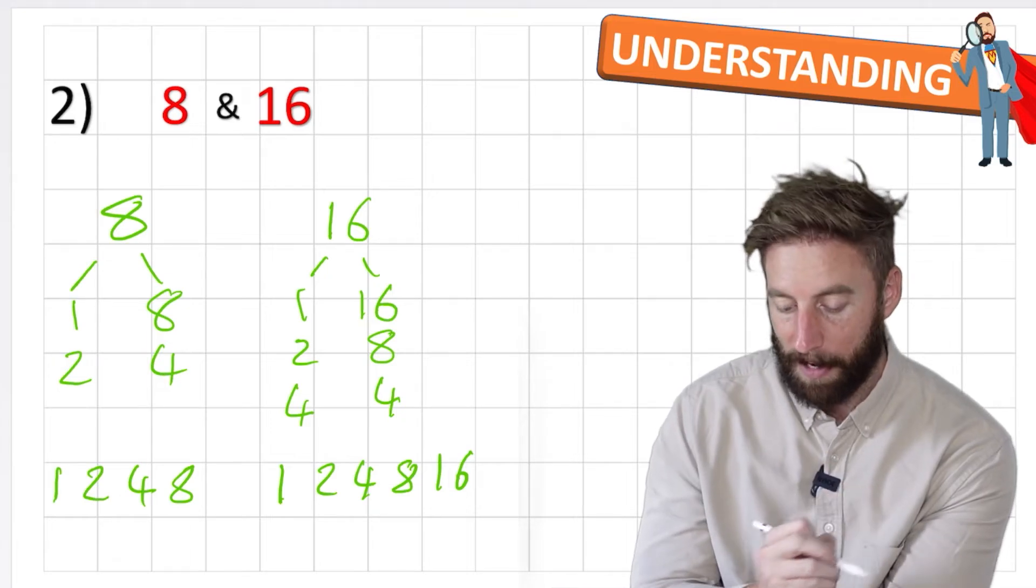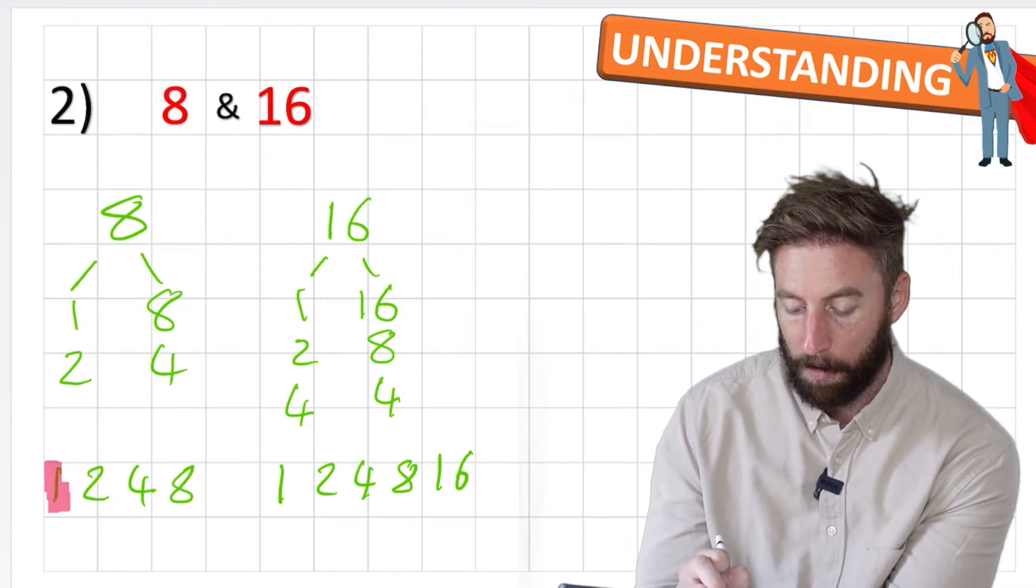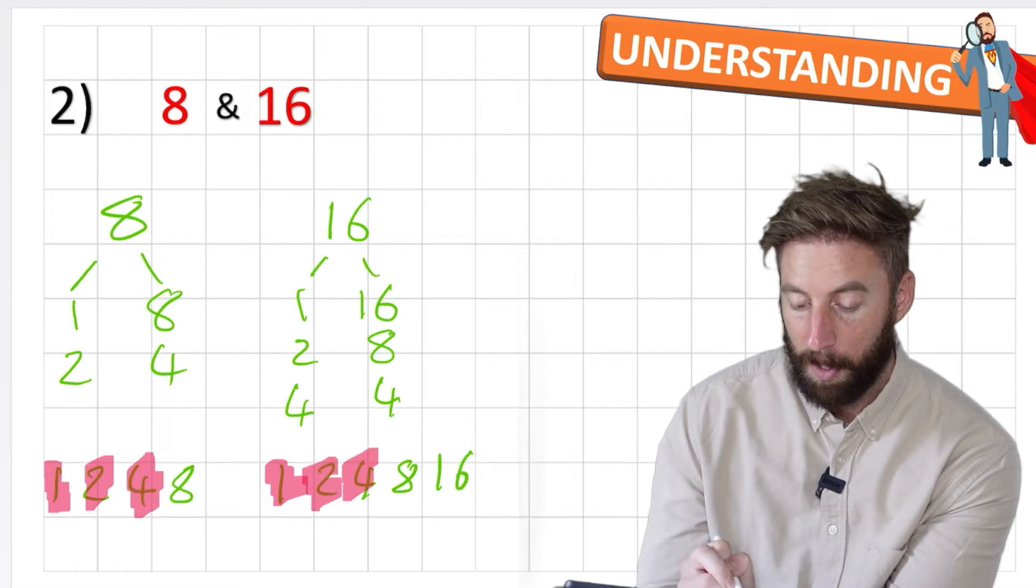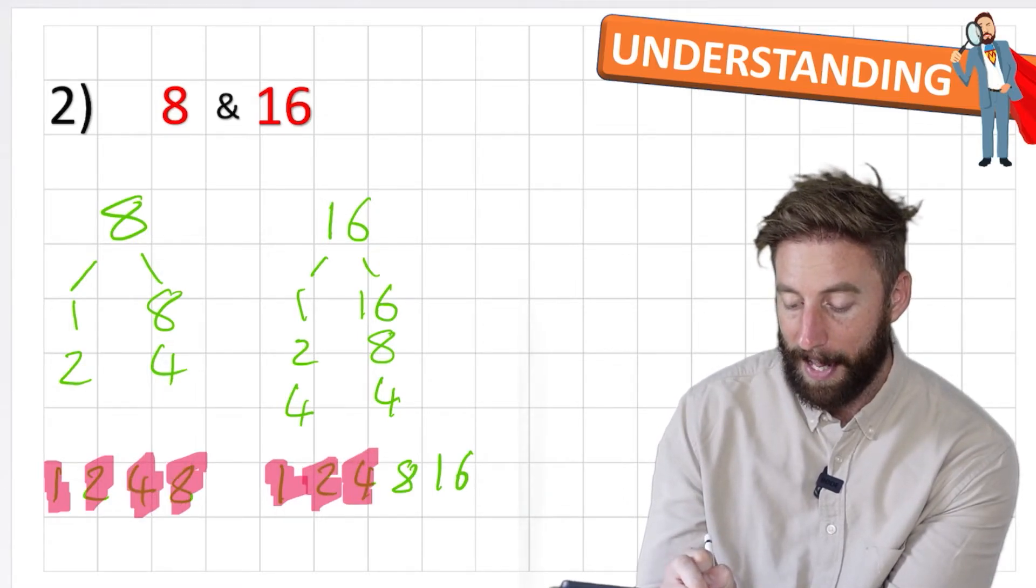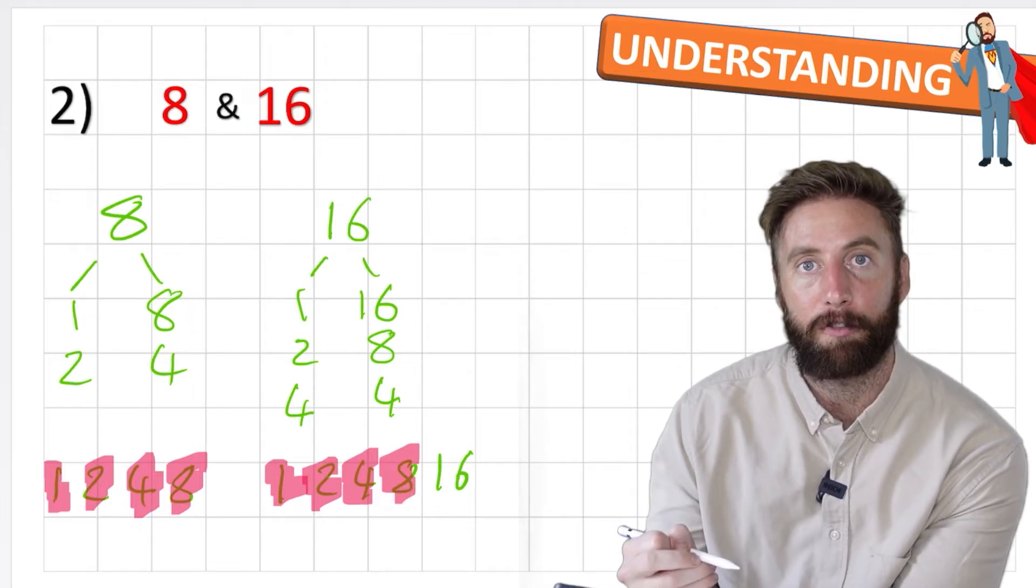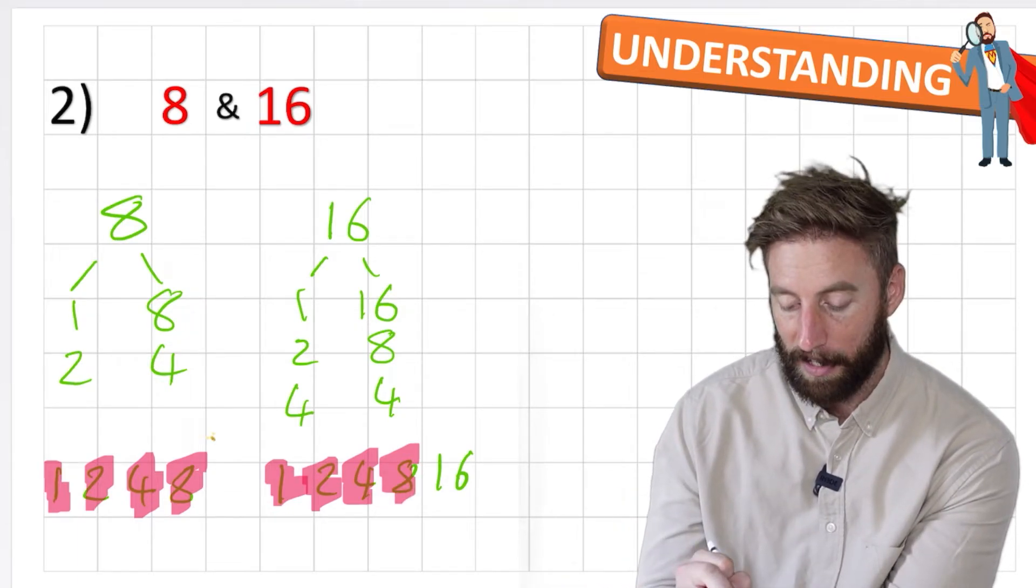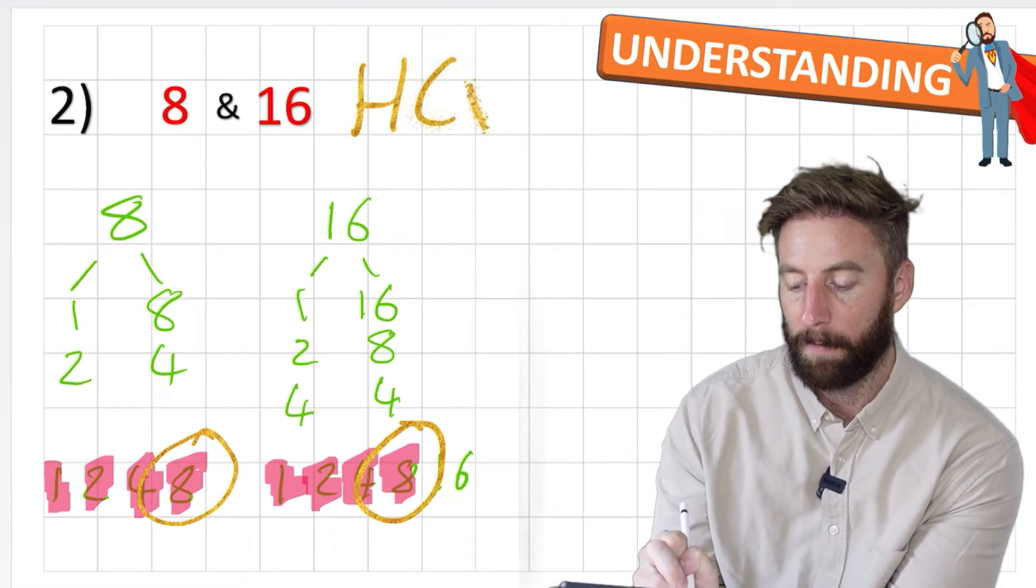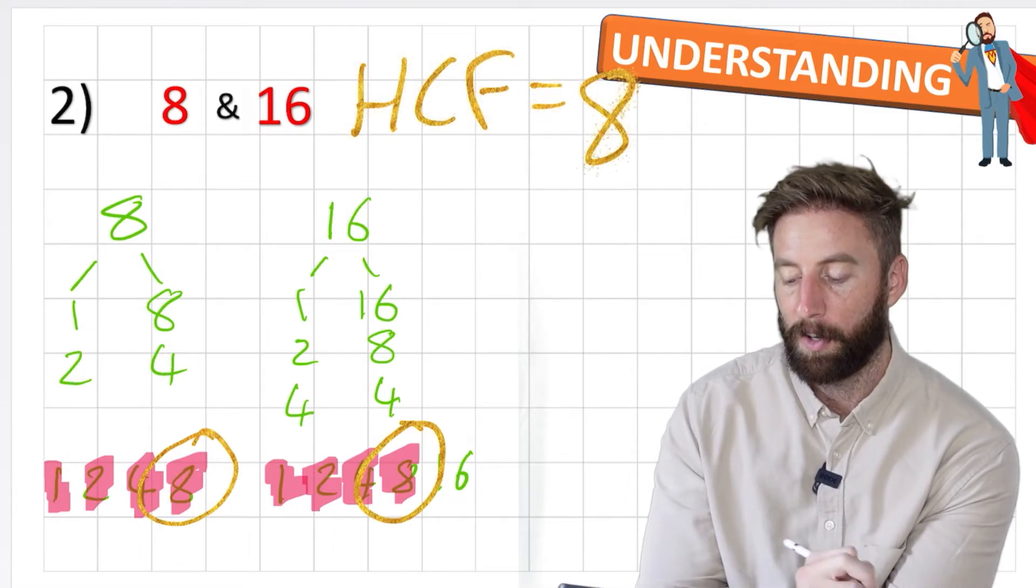Now let's look for those common factors. I have a one in both. I have a two in both. I have a four in both. I also have an eight in both. So then now looking for my highest common factor, I can see that eight is my highest common factor. Awesome.